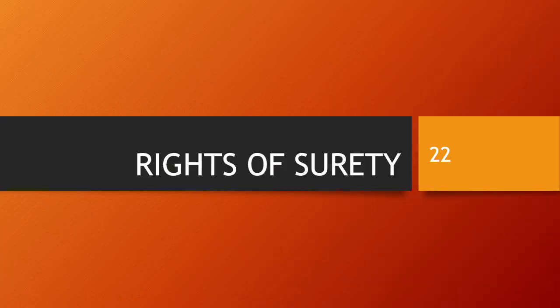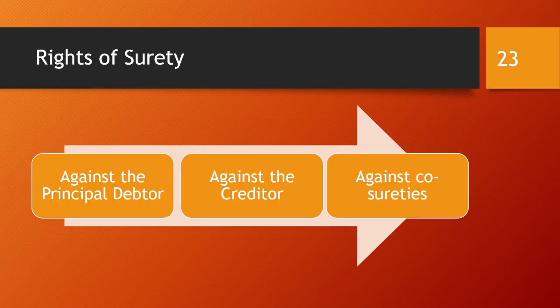What are the different rights that a surety gets out of a contract of guarantee? Any surety has three kinds of rights: one is against the creditor, another against the principal debtor, and if there are co-sureties — that means more than one person giving surety or guarantee — then the surety will also have rights against the other sureties.